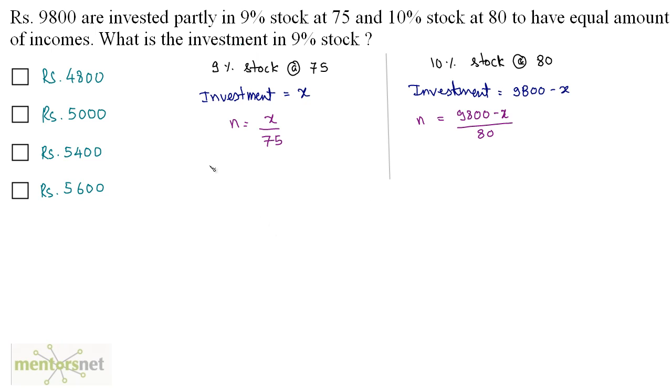Now let us calculate the dividend in each case. So in 9% stock, the dividend will be equal to, in this case I am talking the total dividend. So the total dividend will equal the dividend on one stock times the number of stocks. So N times dividend on one stock, N is X by 75 times the dividend on one stock, so 9 is the dividend that is obtained on the face value of 100 rupees, so times 9.